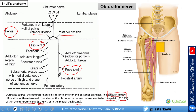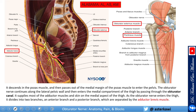Once it passes the obturator canal, it branches into anterior and posterior around the obturator externus muscle and then keeps descending. It descends in the psoas muscle, then passes on the medial margin of the psoas muscle to enter the pelvis, continues along the lateral pelvic wall, and enters the medial compartment of the thigh by passing through the obturator canal. It supplies most of the adductor muscles and skin of the medial aspect of the thigh as it divides into two branches.